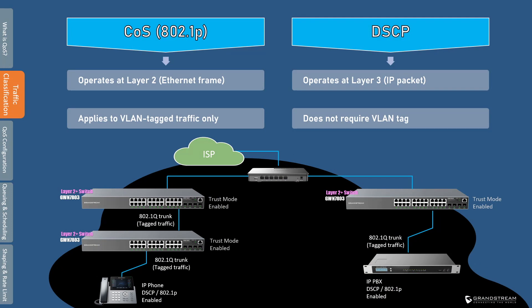802.1p, or class of service, is a value that is carried in a Layer 2 frame and applies to VLAN-tagged traffic only. When a trunk interface receives a frame that carries a CoS value, the switch will parse the CoS information to determine the outbound priority queue for the frame. If a frame has a higher CoS value, the frame is placed in a higher priority queue and is forwarded first. As we will explain later in this video, each class maps to a queue with a priority level.